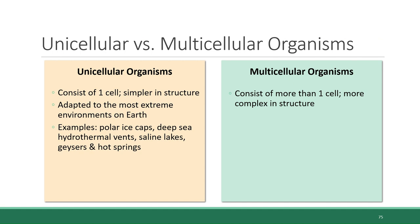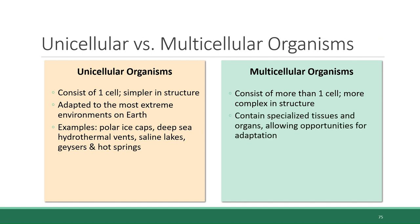Single-celled microbes are known to live in polar ice caps, around deep-sea hydrothermal vents, within saline lakes that have salt levels so high that other types of organisms can't survive in them, and in geysers and sulfurous hot springs. On the other hand, multicellular organisms contain specialized tissues and organs, which allows opportunities for adaptations to evolve that would not be possible in single-celled organisms.